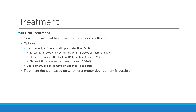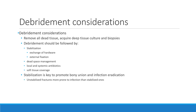The treatment decision is based on whether proper debridement is possible. When debriding FRIs, the key thing is to remove all dead tissue and also to acquire cultures and biopsies to inform antibiotic therapy. Debridement should usually be followed by fracture stabilization—either an external fixator or an exchange of existing hardware—managing the dead space, and providing local and systemic antibiotics. Ensuring adequate soft tissue coverage is another key element. Stabilization is really key to promote bony union and infection eradication, as unstabilized fractures are more prone to infection than stabilized ones.